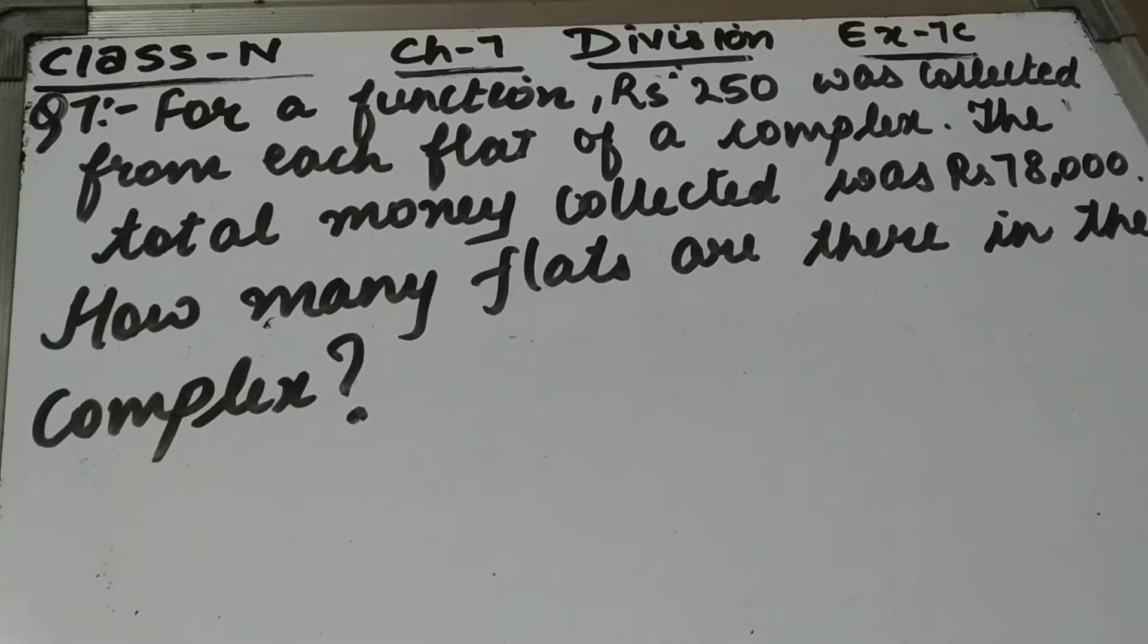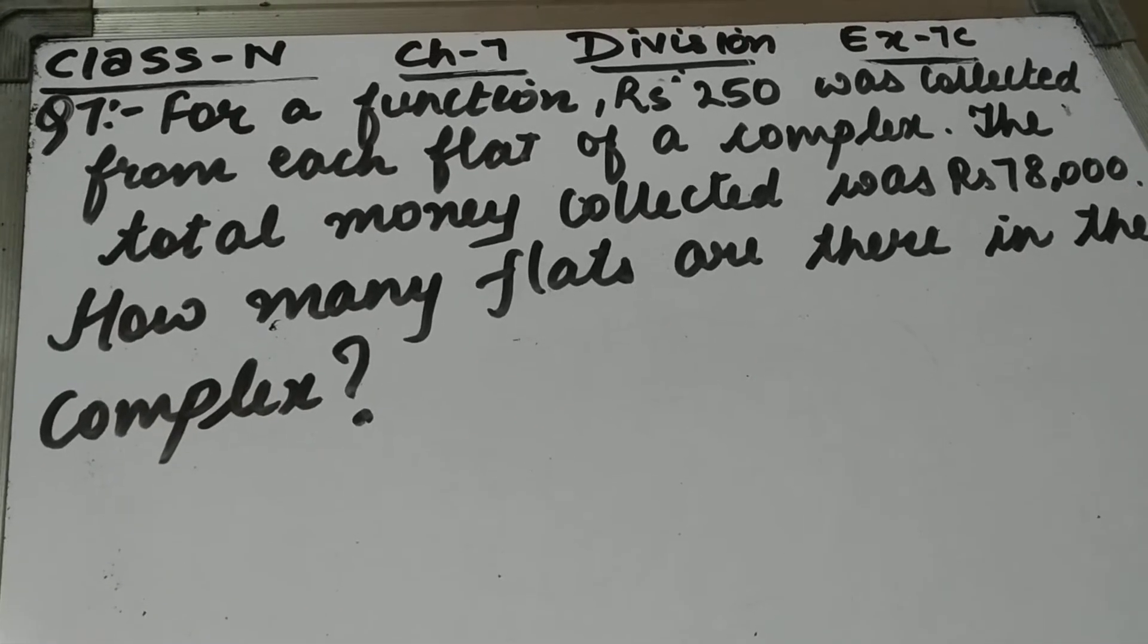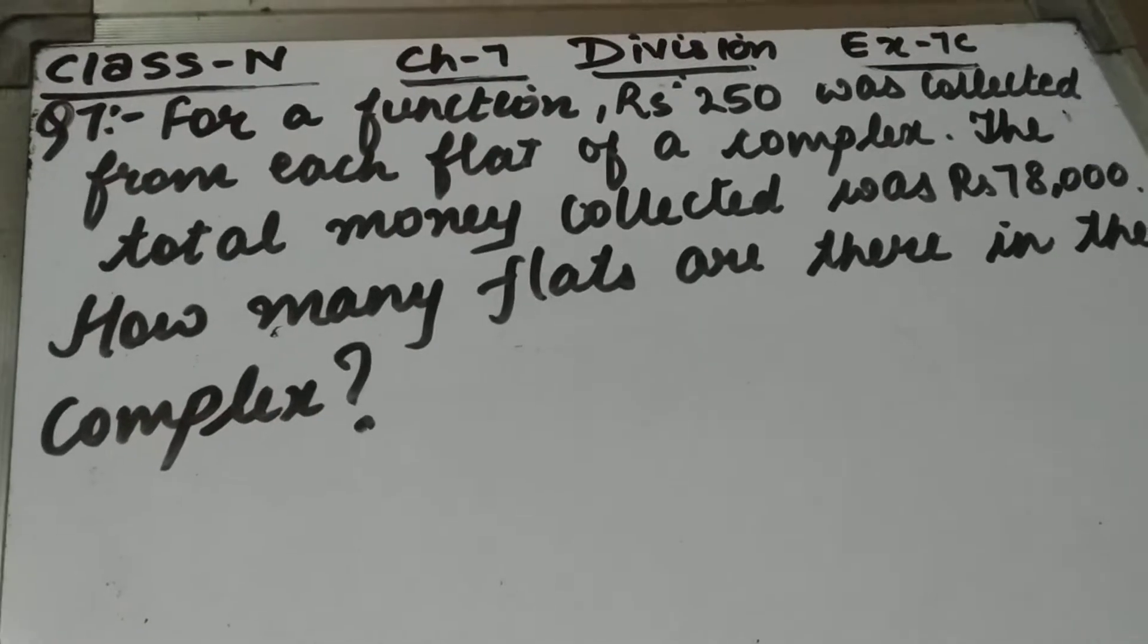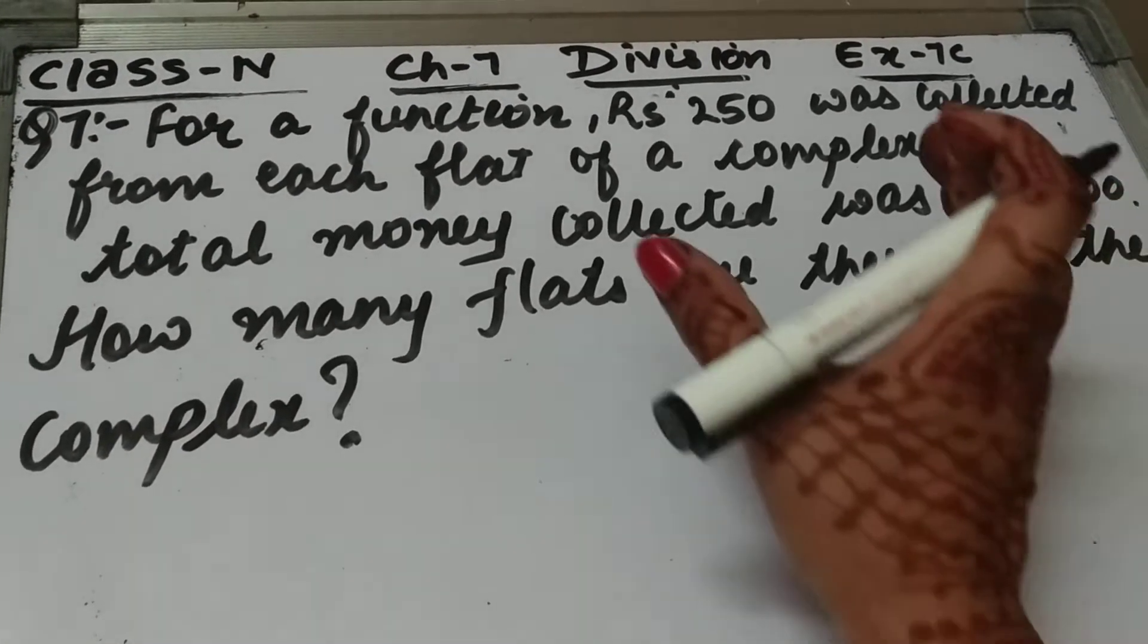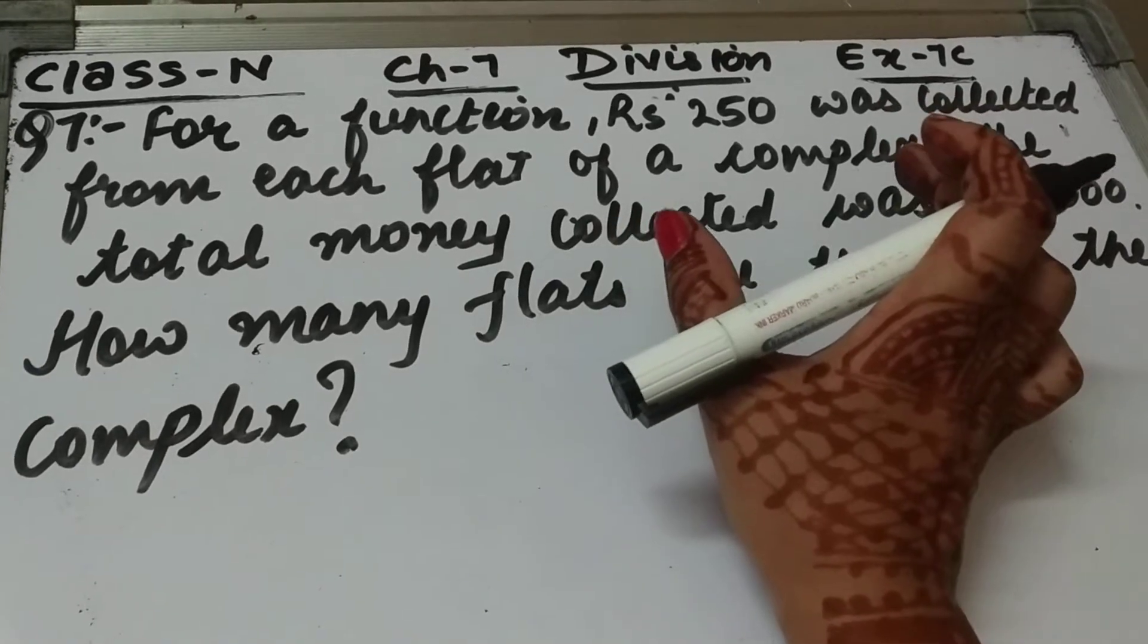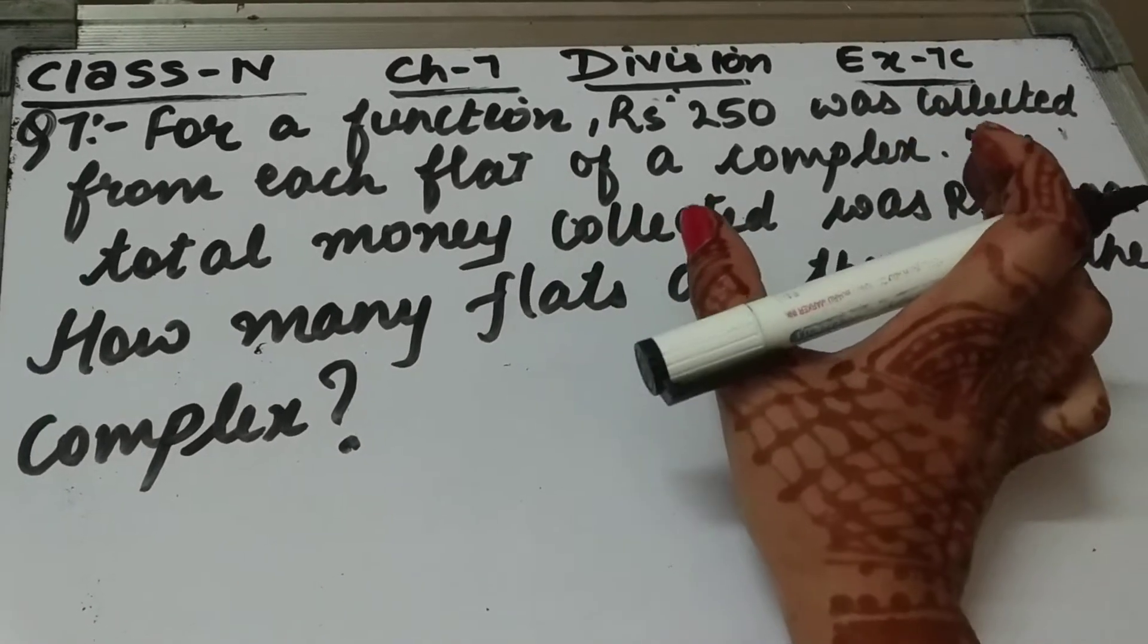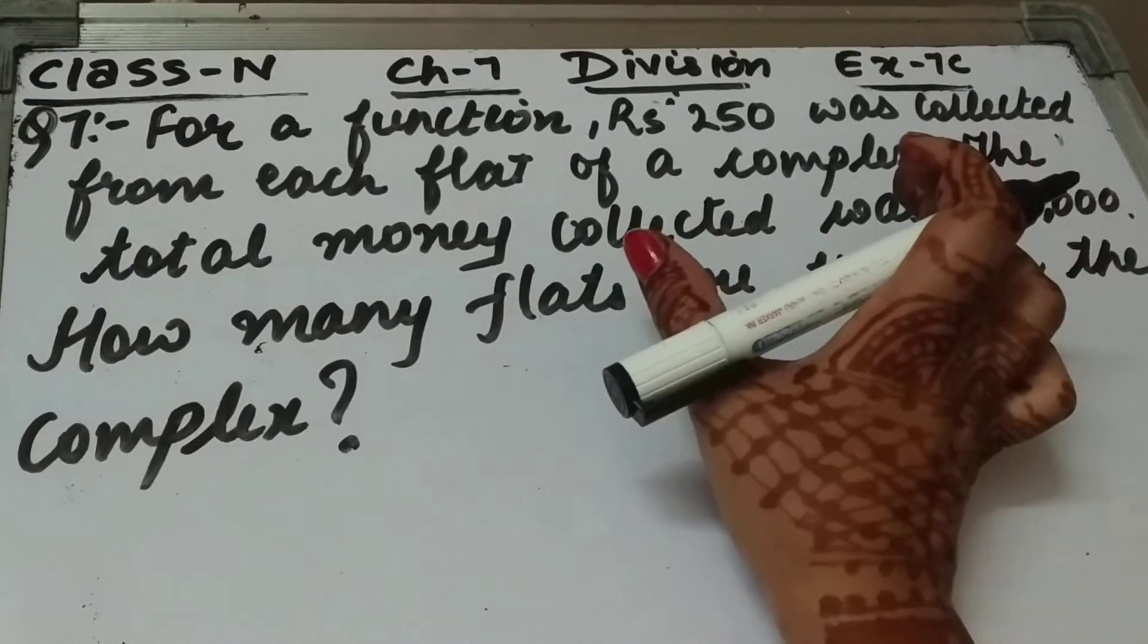Let's start question number 7. Question is for a function. Rupees 250 was collected from each flat of a complex. Koi function hai, jiske liye 250 rupees her flat se, joh complex hai, uske her flat se 250 rupees collect kiye gai.